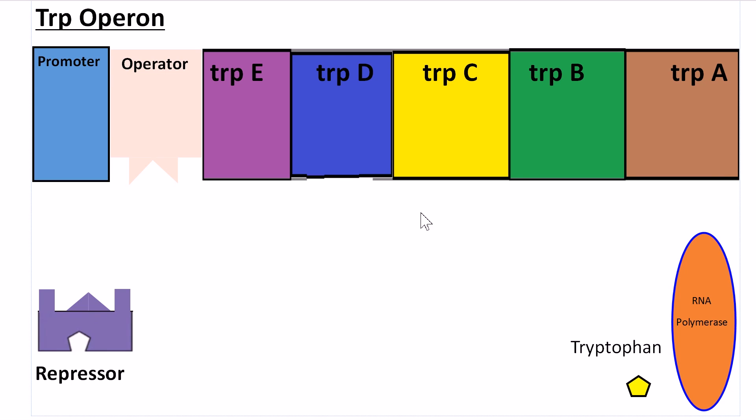We are now going to move on to the trp operon. The trp operon is essentially the opposite of the lac operon. It is designed to make tryptophan when it is not present.